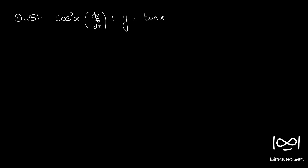Question number 251. The differential equation is cos²x · dy/dx + y = tan x. Dividing the given differential equation throughout by cos²x, we have dy/dx + y · sec²x equal to tan x · sec²x.